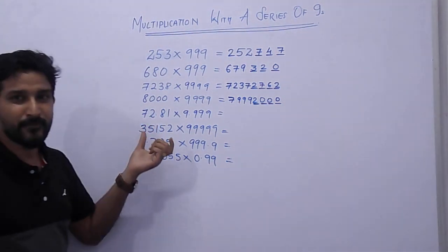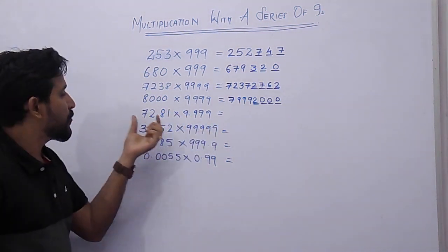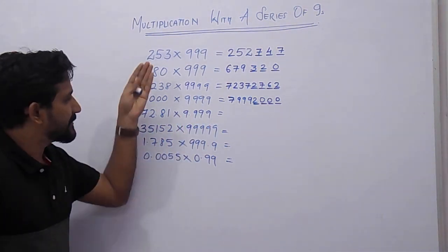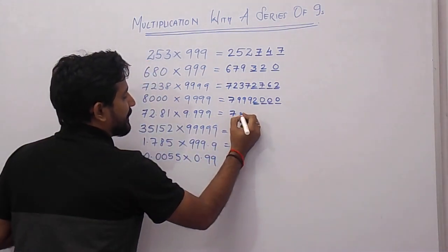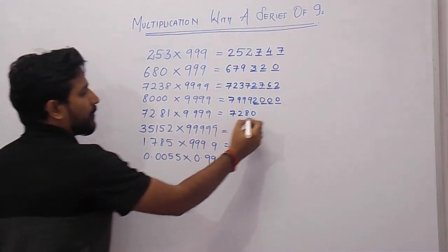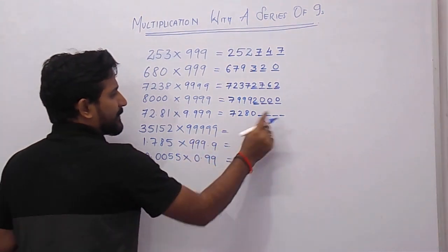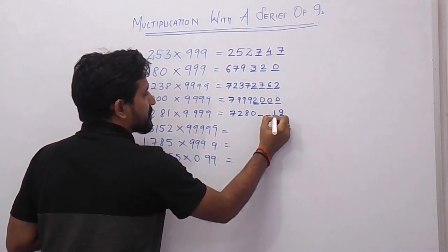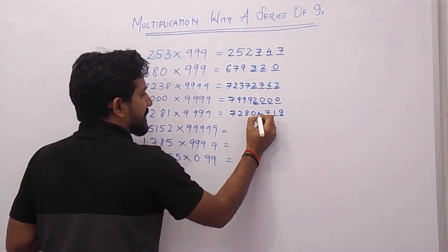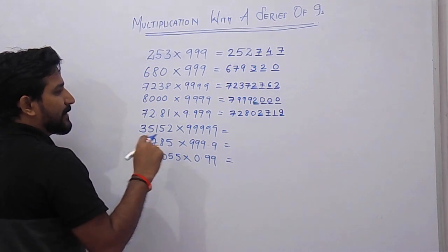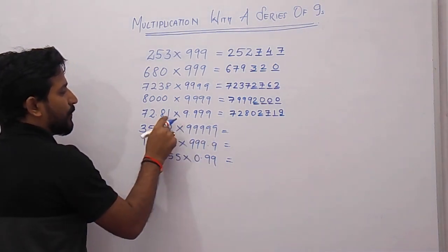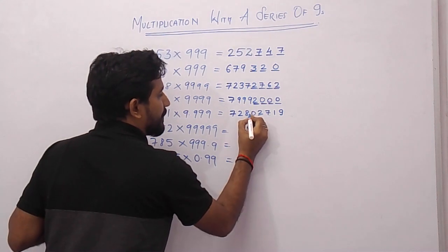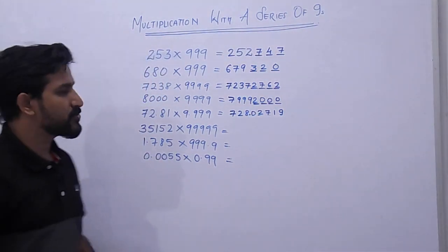Now we will see a decimal example: 72.81 × 9.99. Just forget about the decimal point — it is a 4-digit number, 7281, with four 9's. Follow the same procedure: decrease by 1 to get 7280. Put 4 spaces and take the 9's complement: 9 minus 0 is 9, 9 minus 8 is 1, 9 minus 2 is 7, 9 minus 7 is 2. Now place the decimal point: count 5 digits from the rightmost value, giving 728.0719.